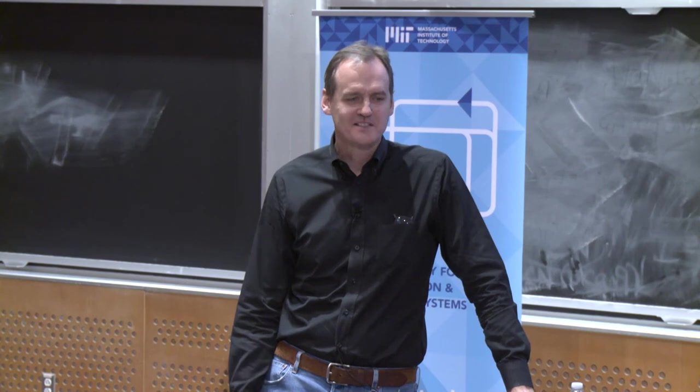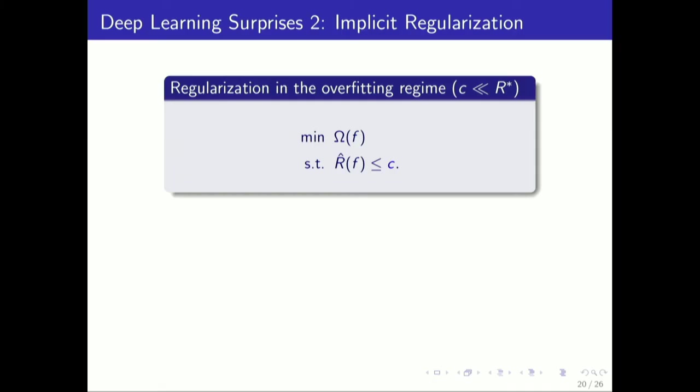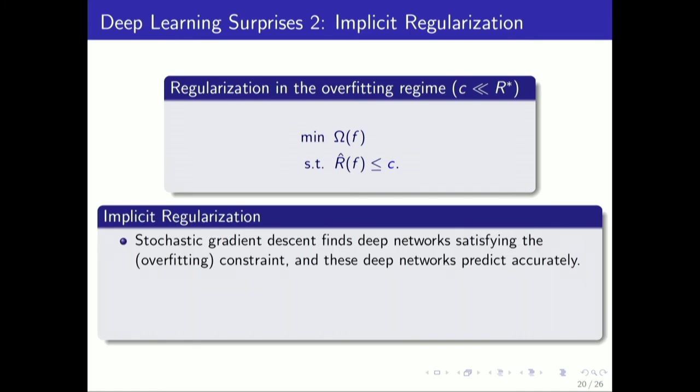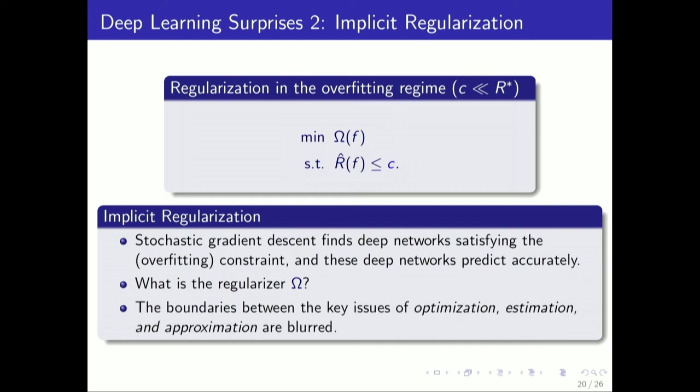Very quickly, the second surprise, the second mystery, I think, is this notion of implicit regularization. If we think about these sort of optimization problems, we're in the overfitting regime. Stochastic gradient descent seems to find deep networks that satisfy that overfitting constraint, and they predict accurately. So what is it that they're minimizing? What is stochastic gradient doing? What's the regularizer look like? If it is indeed a regularizer.